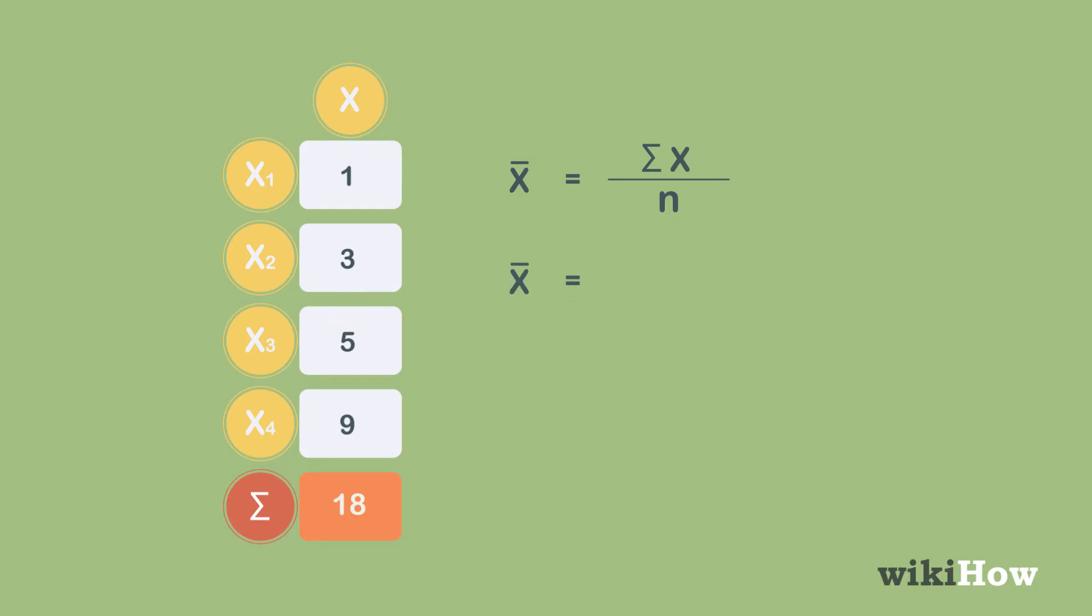For example, if your data points are 1, 3, 5, and 9, you would add those together and get 18.